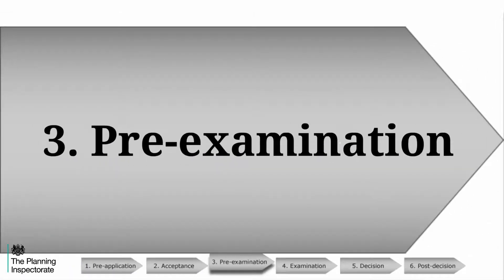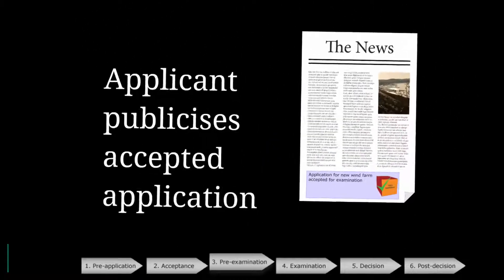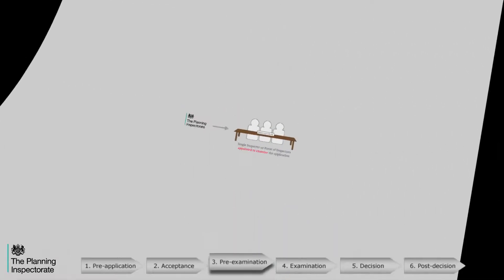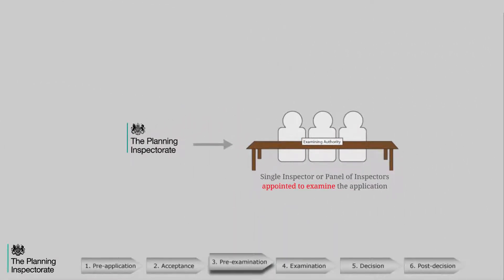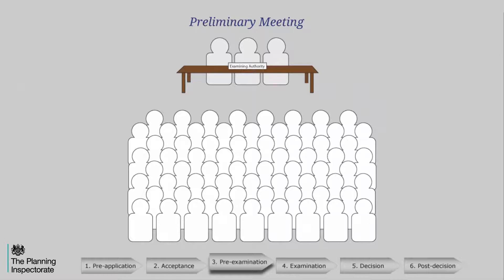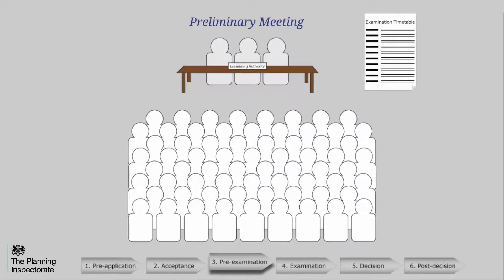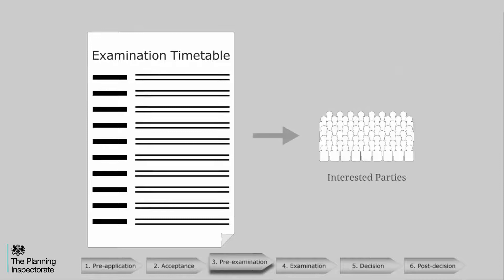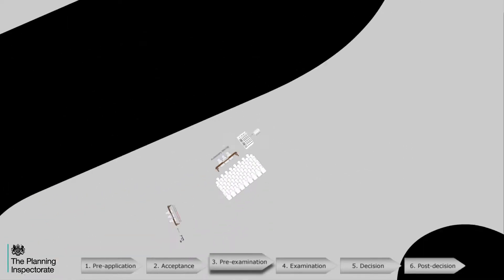At the pre-examination stage, the applicant must publicise that the application has been accepted by the Planning Inspectorate and include when and how parties can register to get involved in the examination as interested parties. The time period for registering is set by the applicant but must be no less than 28 days. From within the Planning Inspectorate, an inspector or panel of inspectors will be appointed as the examining authority. A preliminary meeting will then be held to discuss procedural issues and the timetable for examination. All interested parties will be notified of the date of the preliminary meeting. After the close of the preliminary meeting, all parties will be notified of the examination timetable. The close of the preliminary meeting marks the end of the pre-examination stage.